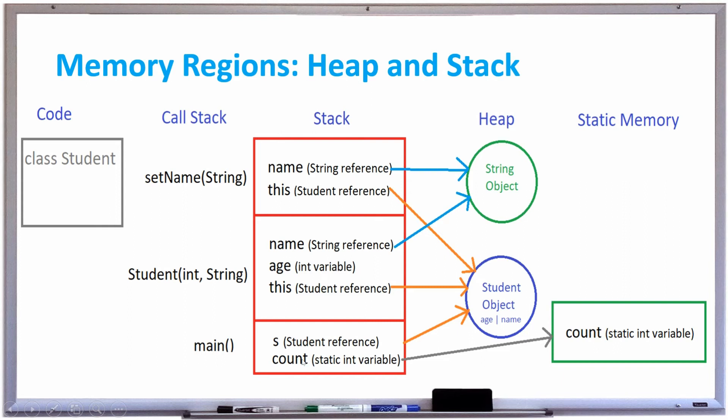And then there is, let's say there's a static variable called count, which keeps track of the number of different students there are, and that gets stored on the static memory right here.